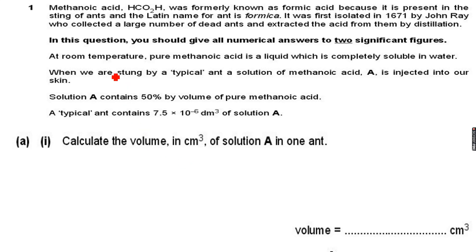Formic acid is present in the sting of ants, and the Latin name for ant is formica. It was first isolated in 1671 by John Ray, who collected a large number of dead ants and extracted the acid from them by distillation.